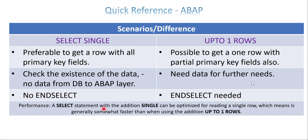Regarding performance: a SELECT statement with the addition of SINGLE can be optimized for reading a single row, which means it is generally somewhat faster than using UP TO ONE ROWS. Comparatively, SELECT SINGLE has better performance. This comes directly from the SAP product documentation.